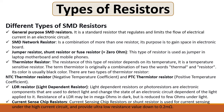Third is the jumper resistor, also called a shunt resistor or fuse resistor. Its value equals zero ohms and it is used as a jumper in laptop motherboards and mobile phones. Fourth is the thermistor resistor, whose resistance depends on temperature. The term 'thermistor' is a combination of the words 'thermal' and 'resistor.' Its color is usually black, and there are two types: NTC (negative temperature coefficient) and PTC (positive temperature coefficient).